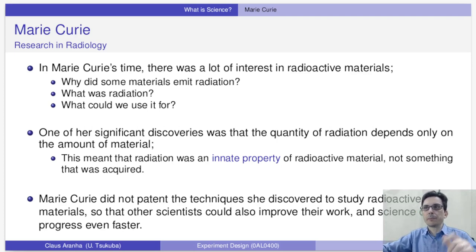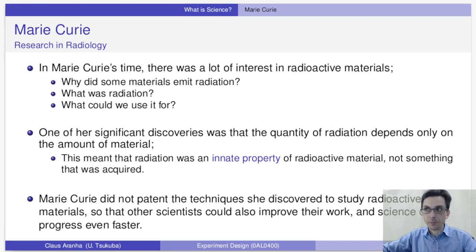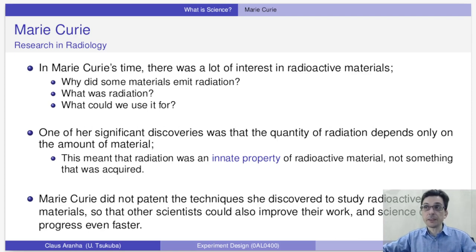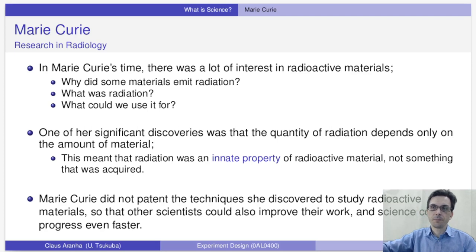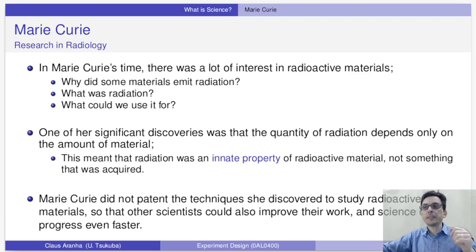One thing I really like about this story is that Marie Curie developed many techniques to study radioactive material, and — importantly — she did not patent those techniques. Instead, she shared them with the scientific community so that other scientists could also benefit from this knowledge and use these techniques to improve the world's understanding of radioactivity. She was one of the earliest pioneers of open data and open methods, and I think this is a really inspiring idea.